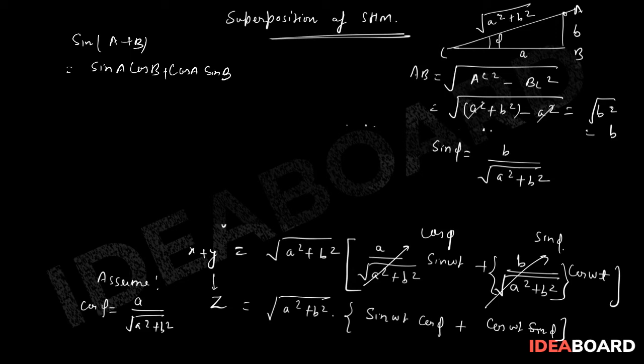If you compare this A is here omega T and B as phi, then I can also write this Z will be equal to under root of A square plus B square. Sin omega T plus phi,